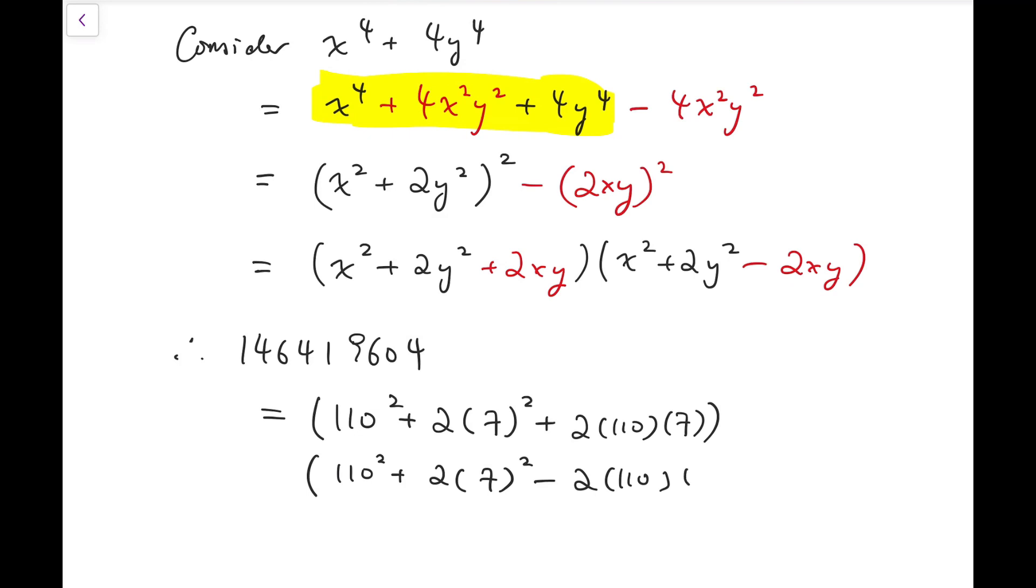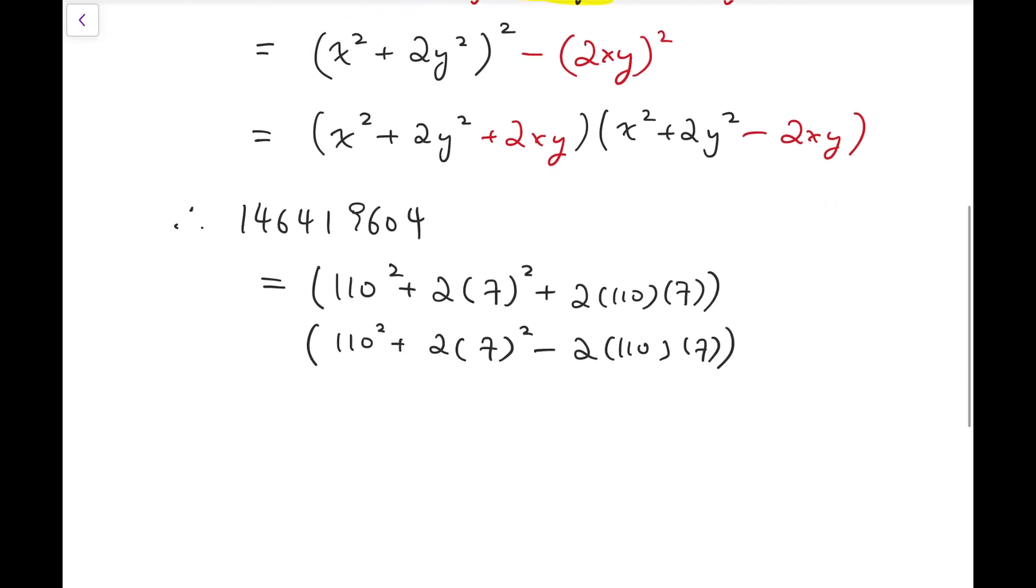This whole thing multiplied by something similar, it's just that we are subtracting 2 times 110 times 7 instead. Now, we can compute each bracket separately.